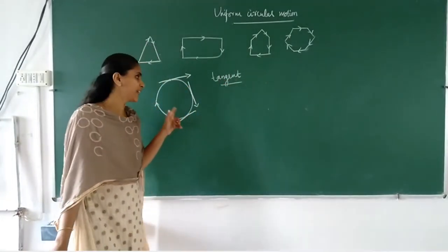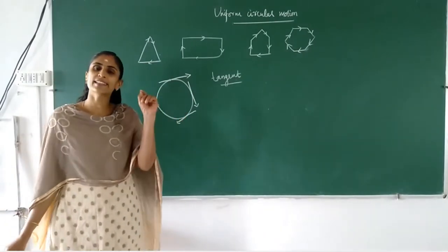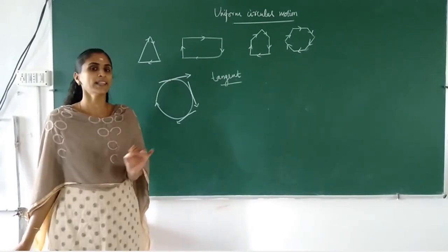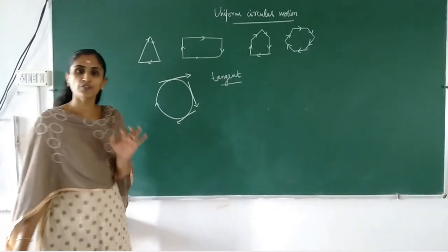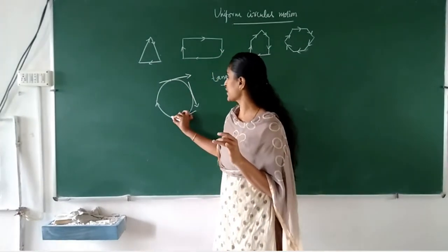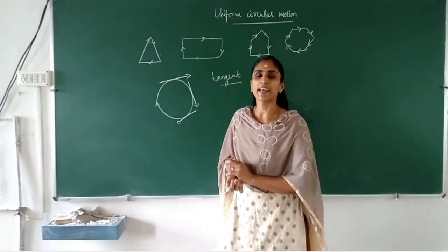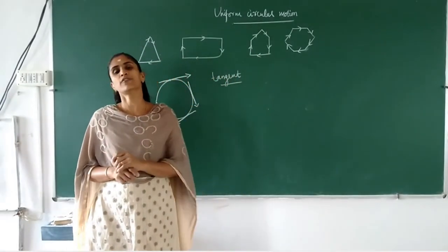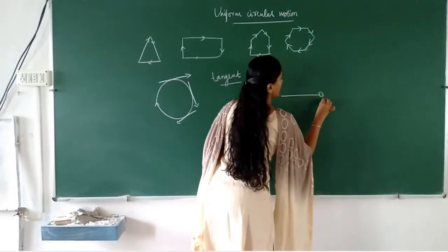Velocity can be changed in two ways — either by its magnitude (the numerical value) or by direction. In uniform circular motion, the direction of velocity is changing at each and every instant of time, but the speed remains the same. The magnitude of velocity remains the same throughout the motion, but each and every instant the direction of velocity is changing.